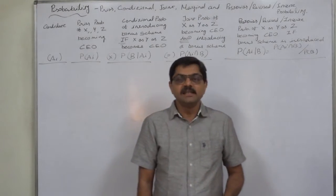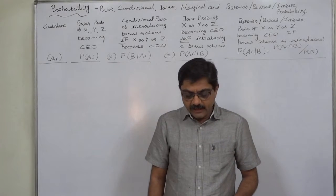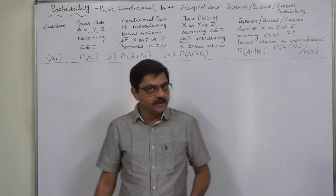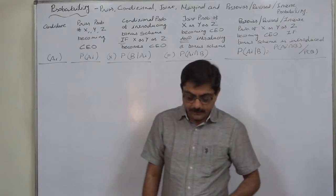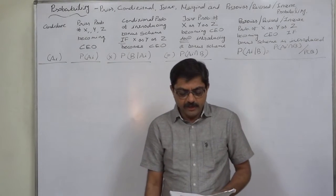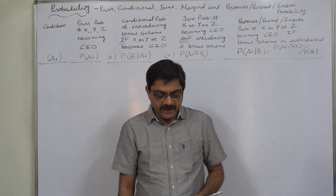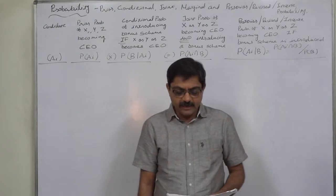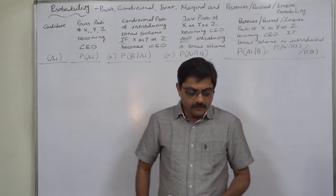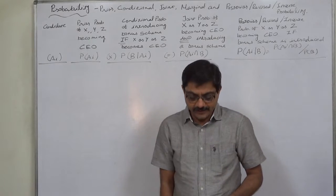The case is: if the probabilities of X, Y, and Z becoming CEO are 4 by 9, 2 by 9, and 1 by 3 — which can be taken as 3 by 9 — and the probabilities that the bonus scheme will be introduced if X, Y, and Z become CEO are 1 by 10, 1 by 2, and 4 by 5 respectively.